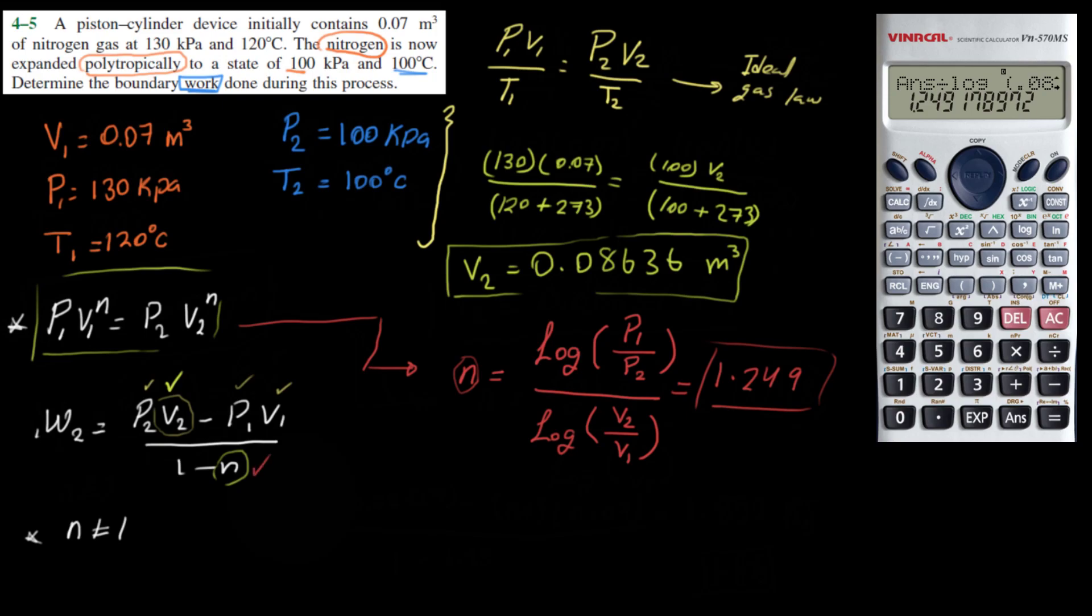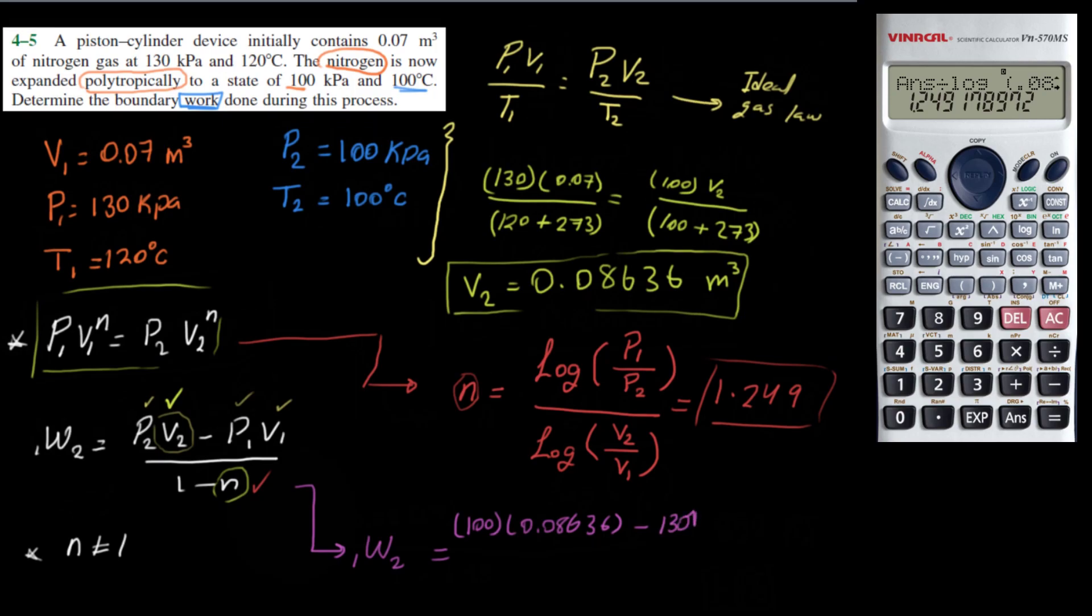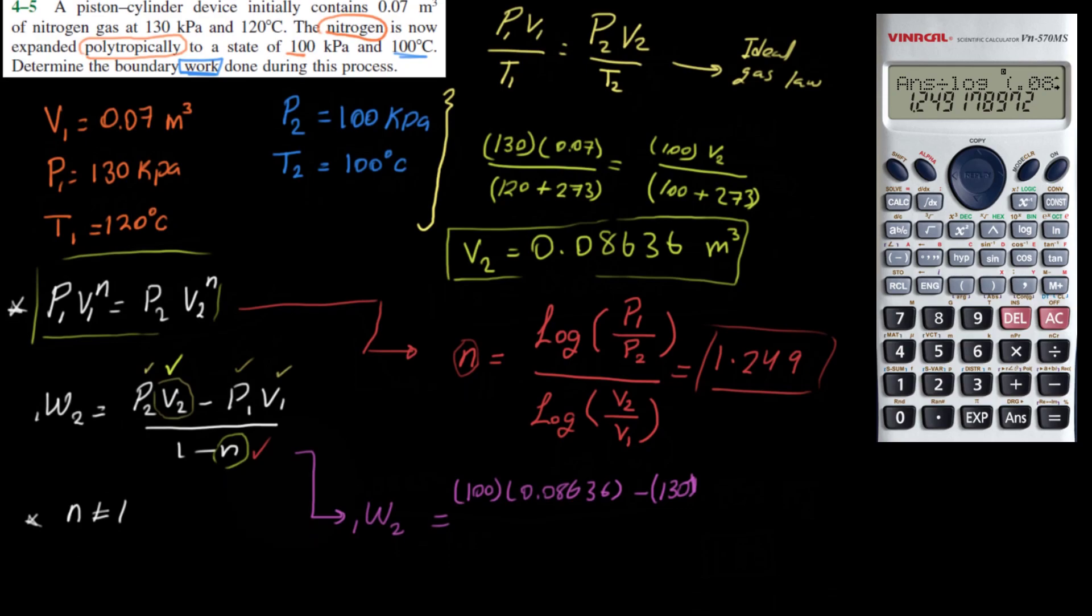Now we have everything. We even have N. So we can now plug in these data into this formula. Work from 1 to 2 is equal to P2, 100, V2, 0.08636, minus P1, which is 130, and V1 is 0.07. Divide that by 1 minus 1.249, and this should give us the answer that we are looking for.